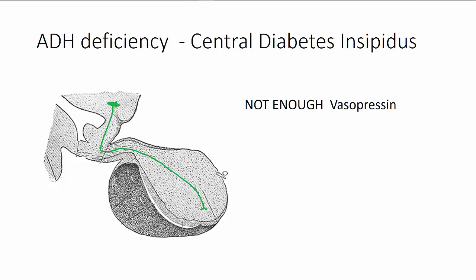Let's start by looking at insufficient antidiuretic hormone release. This is called diabetes insipidus. Don't let the word diabetes confuse you — we're not talking about diabetes mellitus, a problem with blood glucose. Diabetes refers to excessive urination, or polyuria. Today we're looking at a problem with ADH secretion from the hypothalamic-pituitary axis. Another kind of diabetes insipidus, due to the kidney not being able to respond to antidiuretic hormone, is called nephrogenic diabetes insipidus.